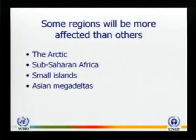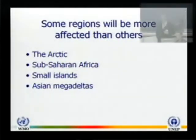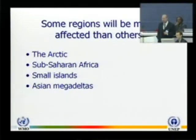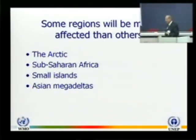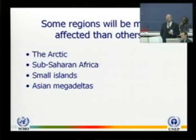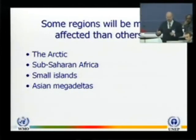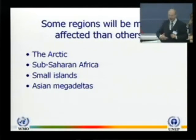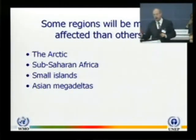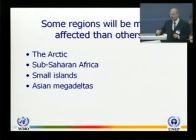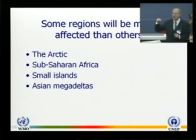Let me briefly mention the regions most affected. There's often difficulty at UN levels in picking out particular regions — we weren't able to list them like this, but I'm listing them for you. These are the places we think are the tipping points regionally: the Arctic, because of high amounts of warming; Sub-Saharan Africa, because of drying; small islands, because of their inherent sensitivity and lack of infrastructure; and Asian mega-deltas — low-lying, in the path of typhoons and an increased frequency of those — with billions of people affected.